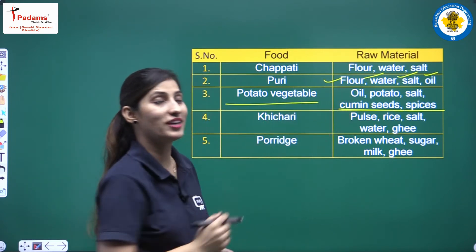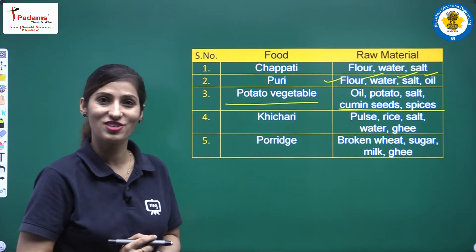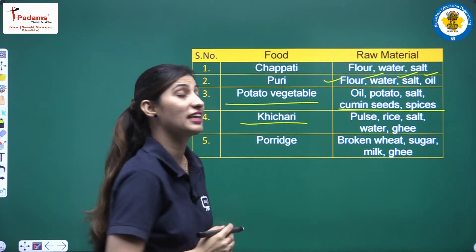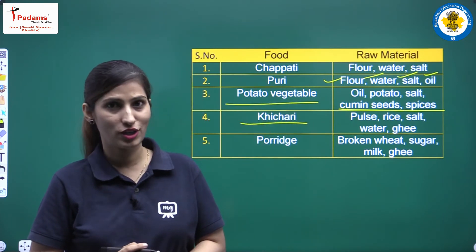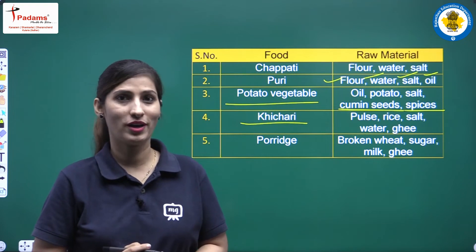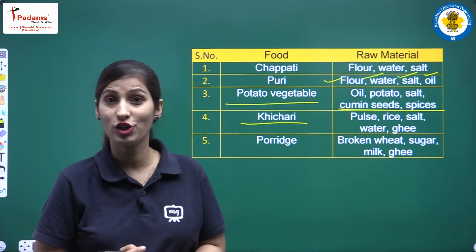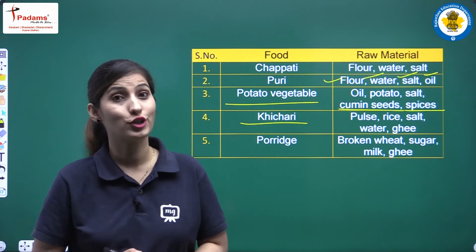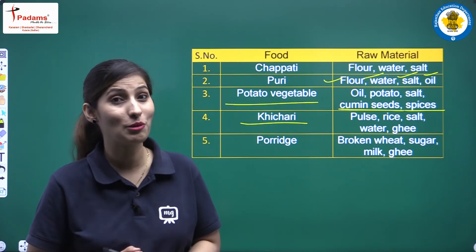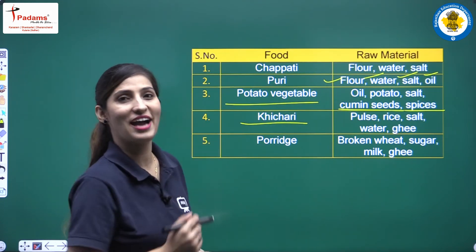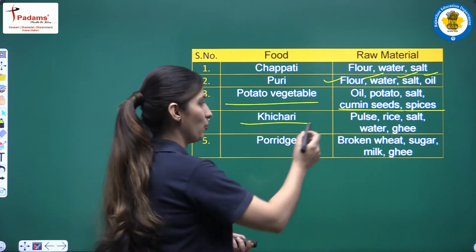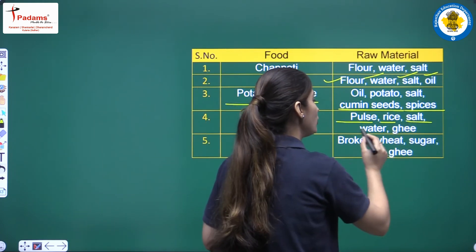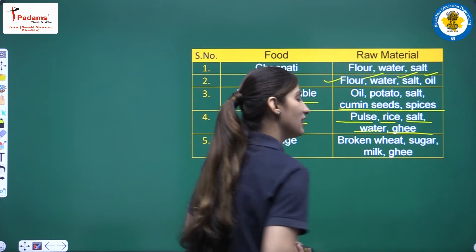Cumin seeds — students, in Hindi we call it jeera. Next one is khichdi. Do you like khichdi? Many children don't like khichdi, but I would like to tell you — it is full of nutrients and very healthy for you. What do we need for khichdi? We need dal, rice, salt, water, and ghee.